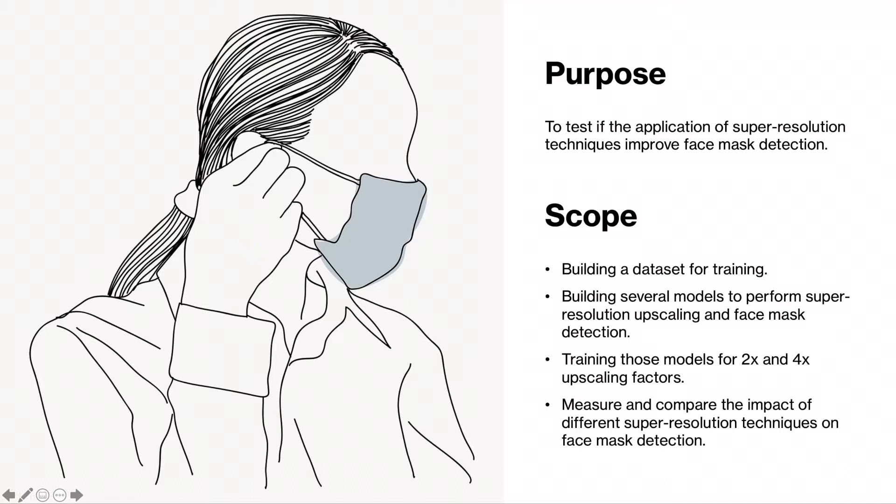The scope of the project includes building a data set for training, building several models to perform super resolution upscaling and face mask detection, training those models for two times and four times upscaling, and measuring and comparing the impact of different super resolution techniques on face mask detection.